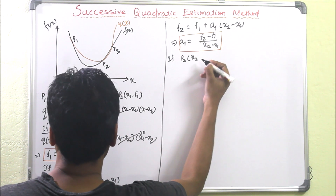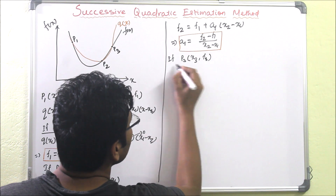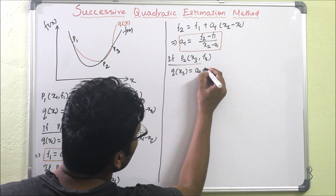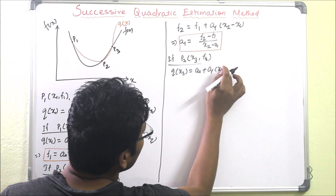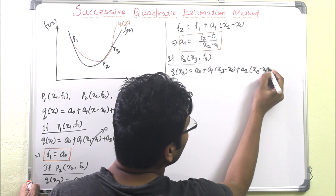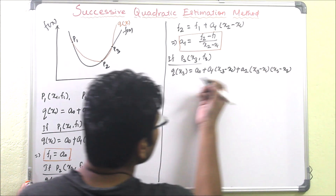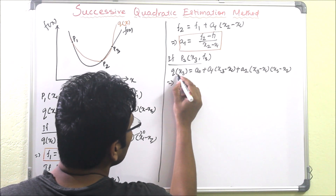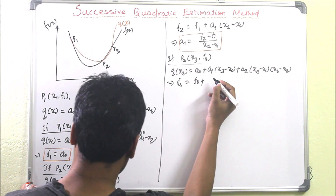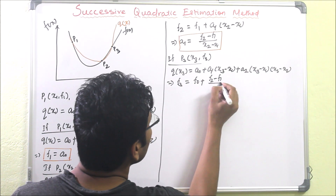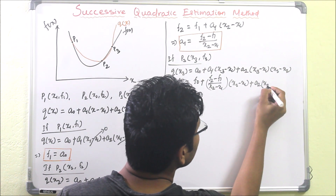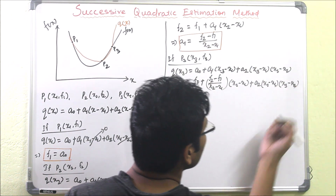Similarly, taking point p3, that is (x3, f3), we get q of x3 equals a0 plus a1 times (x3 minus x1) plus a2 times (x3 minus x1) times (x3 minus x2). Substituting q of x3 equals f3, a0 equals f1, and a1 equals (f2 minus f1) divided by (x2 minus x1), we can solve to find the value of a2.